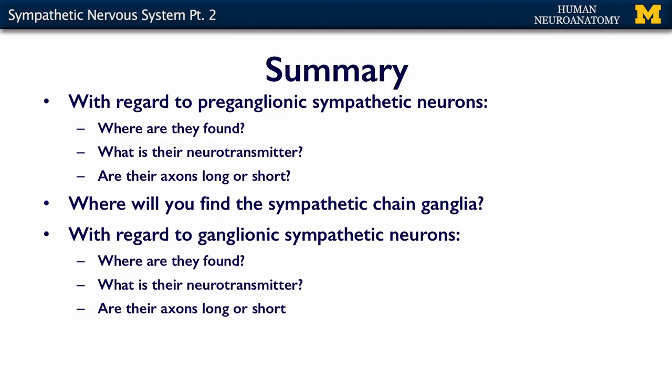In summary, what you need to know about the sympathetic nervous system: Regarding the preganglionic sympathetic neurons — where are they found, what is their neurotransmitter, and are their axons long or short? Where will you find the sympathetic chain ganglia? Regarding the ganglionic neurons — where are they found, what is their neurotransmitter, and are their axons long or short? If you understand all of these concepts, you are ready for the assessment.